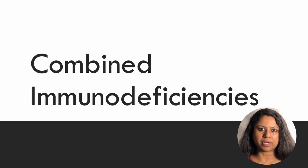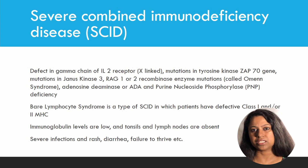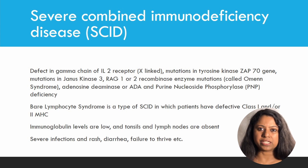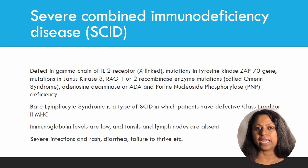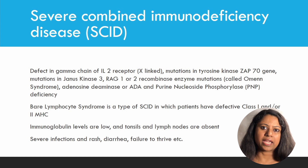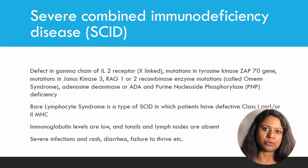Let's talk about the combined immunodeficiencies. Severe combined immunodeficiency, or SCID, is caused by a defect in both T cell and B cell function. It presents with a severe immunodeficiency featuring recurrent pyogenic infections, recurrent fungal and intracellular microbe infections, viral infections, cancers, autoimmune disorders, and failure to thrive. Physical examination may show the lack of tonsils and lymph nodes.